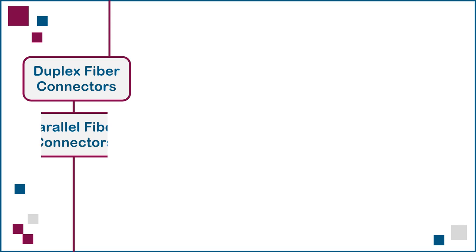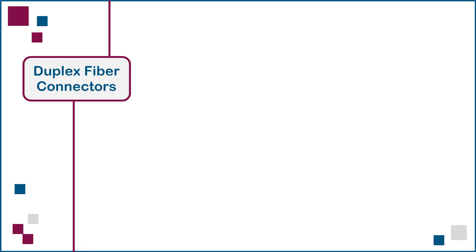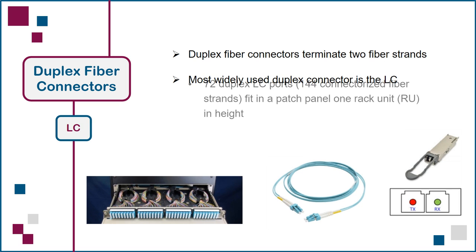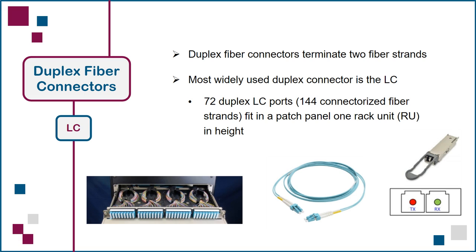Next, we'll summarize the two fiber duplex and multi fiber parallel connector options for a designer to consider when planning an optical fiber cabling system. Duplex fiber connectors terminate two fiber strands, and currently the most widely used duplex connector is the LC, with a density of 72 duplex LC ports, or 144 connectorized fiber strands, capable of fitting a patch panel one rack unit, or RU, in height. However, the continuous growth in network performance requires more fibers in the same amount of space, on both patch panels and optical transceivers, which means we need connectors with greater density than the LC.